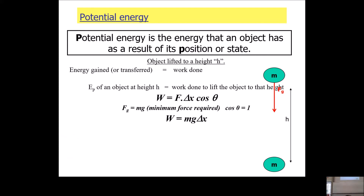You know the force is equal to the weight, which equals mg. So instead of writing F delta x, you write mg delta x. In this case delta x is the height, so it becomes mgh — the potential energy formula. That's where it comes from: directly from the definition of work applied to this scenario.